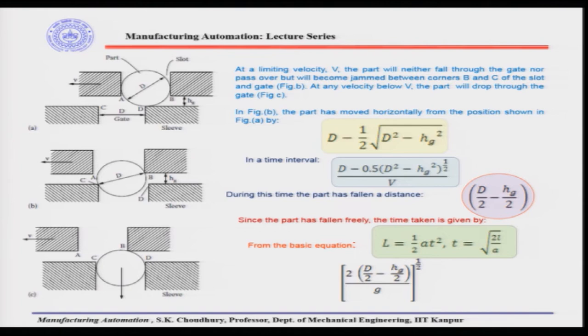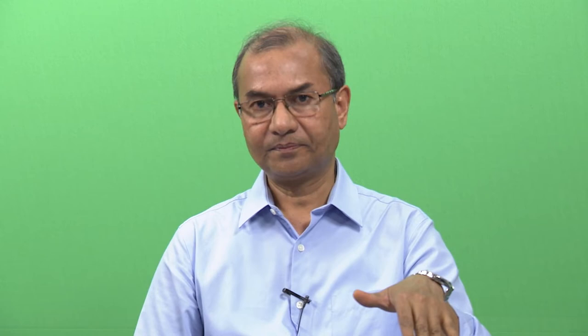Keeping that in mind, let us consider figure A: the part has just started falling and is at the edge of the gate. In figure B, the part has moved a certain distance horizontally and a certain distance vertically. The horizontal distance moved can be found as one-half of the square root of (d² minus hg²).